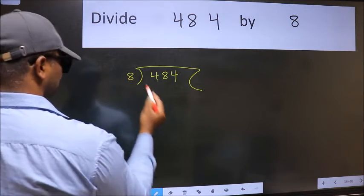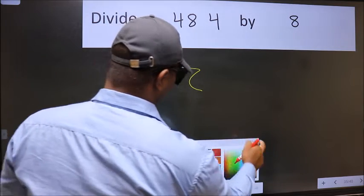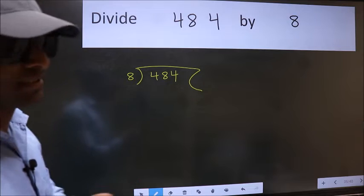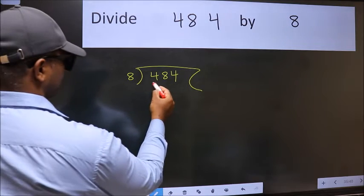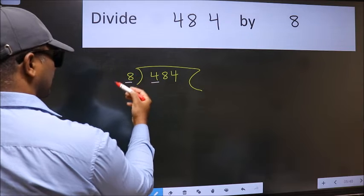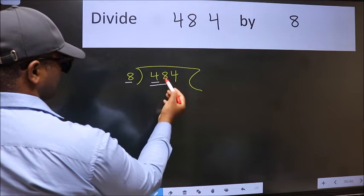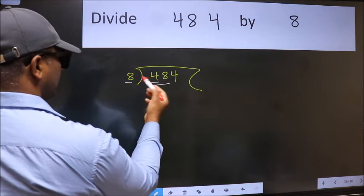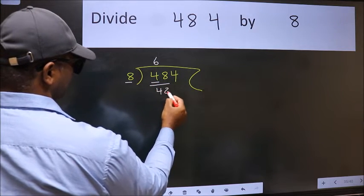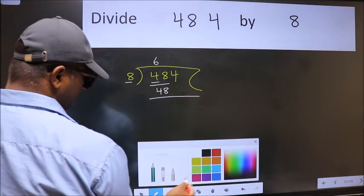8 here, this is your step 1. Next, here we have 4 and here 8. 4 is smaller than 8, so take two numbers: 48. When do we get 48 in 8 table? 8 times 6 is 48. Now we should subtract, we get 0.